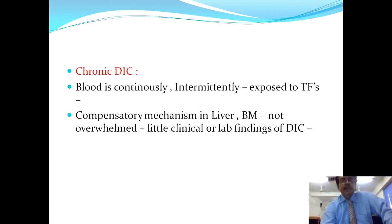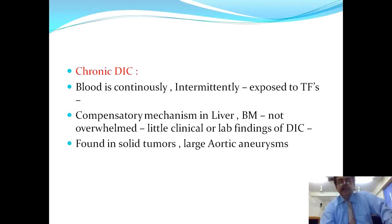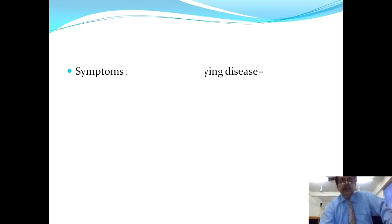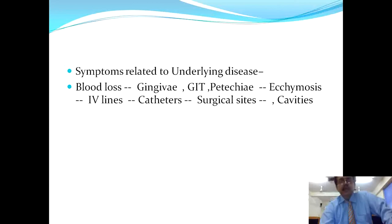In chronic DIC, blood is continuously or intermittently exposed to tissue factors known as tissue thromboplastins, but the compensating mechanisms in the liver and bone marrow are not overwhelmed. Little clinical or lab findings of DIC will be recognizable at this stage. Chronic DIC is especially a feature of solid tumors and large aortic aneurysms.